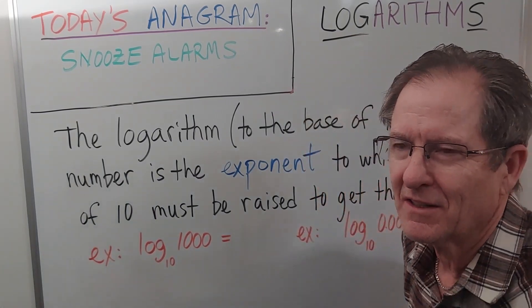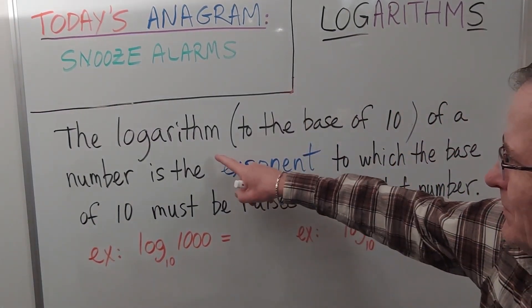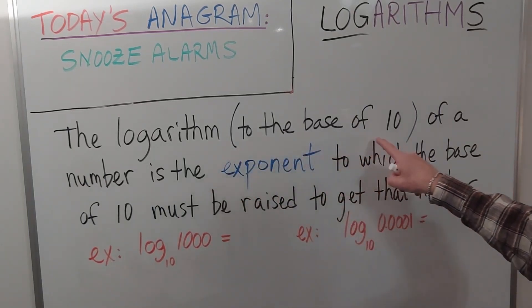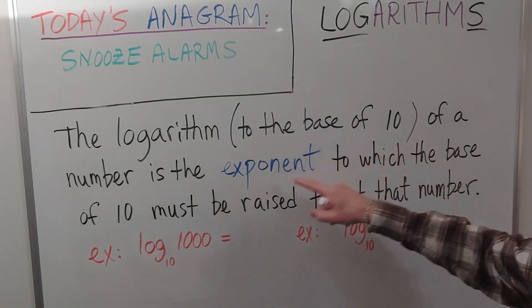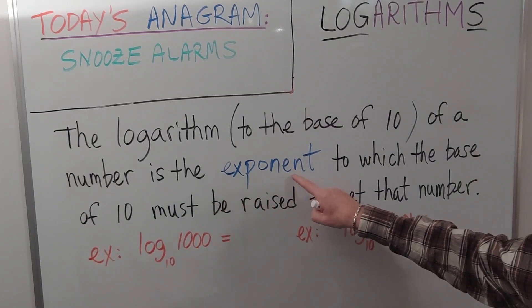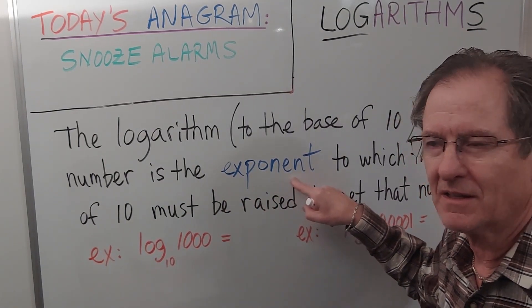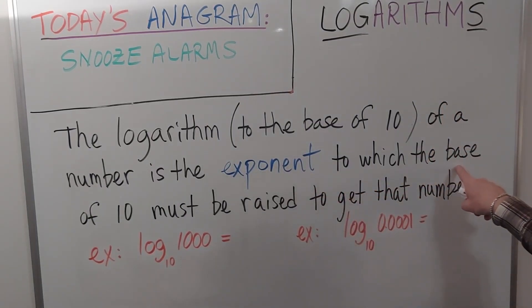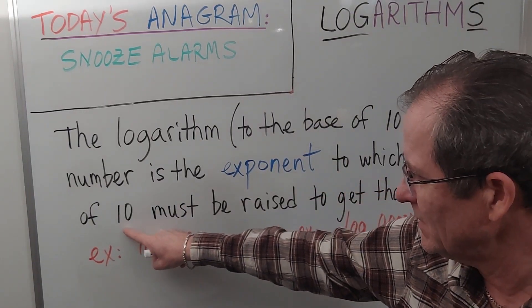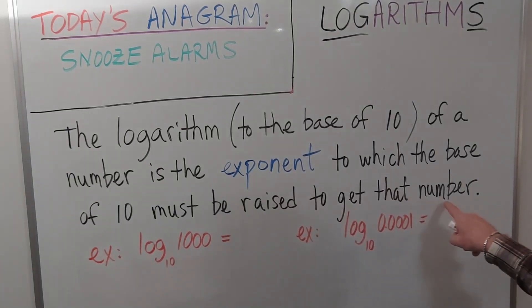Alright, here's the definition of a logarithm. The logarithm to the base of 10 in particular of a number is the exponent. So a logarithm is an exponent, that's all it is. To which the base, which is 10 in this case, must be raised to get that number.